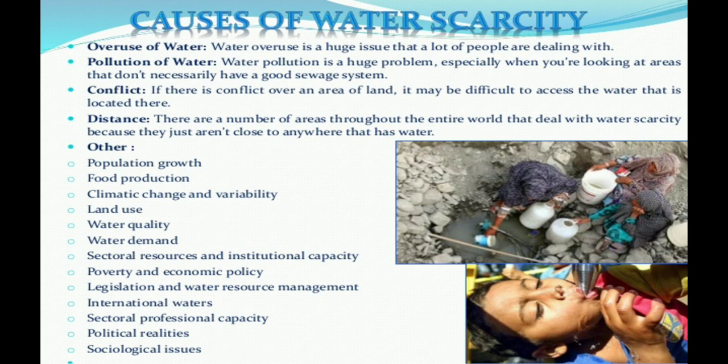Next is over-utilization and mis-utilization of water. There are many states in India which have over-utilized their water resources, like Punjab and Haryana. Pollution of water resources is another factor responsible for water shortage. Domestic waste and industrial waste are the main factors responsible for contamination of water.